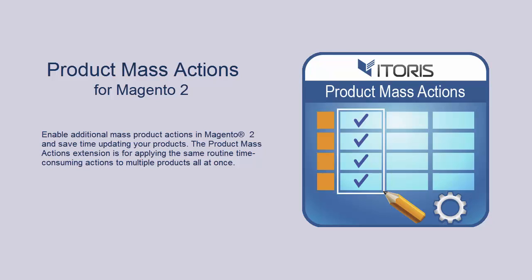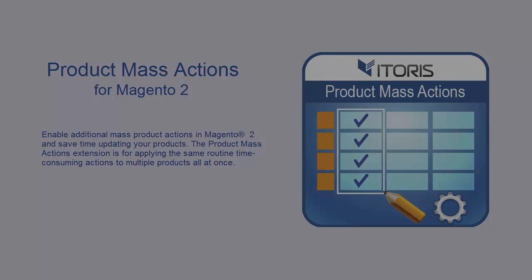Dear viewers, our team is glad to show you a tutorial for our extension called Product Mass Actions for Magento 2. The extension allows you to apply the same time-consuming actions to multiple products in bulk. Updating multiple products together will help you save time on routine actions. It applies the Mass Actions using Direct SQL queries, which allows processing thousands of products in less than a second.